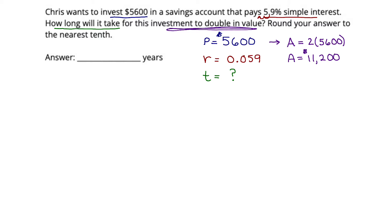So we have four bits of information: P, R, T, and A. And where we want to go is the formula that relates them all — A, P, R, T. Do you remember what it was? Our formula that relates A, P, R, and T is: A equals P times the quantity 1 plus R times T. Does that look familiar?